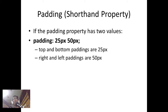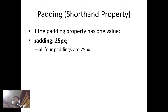If there are only two values — for example, padding: 25px 50px — the first number is for the top and bottom paddings (25 pixels) and the second number is for the left and right padding (50px). If there is only one value provided, then all paddings for each side will have identical values — in this example, 25 pixels.